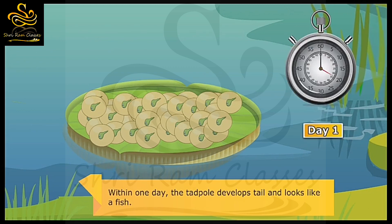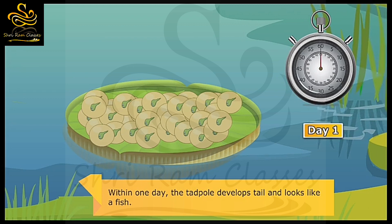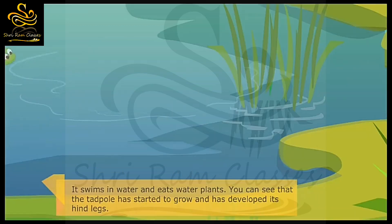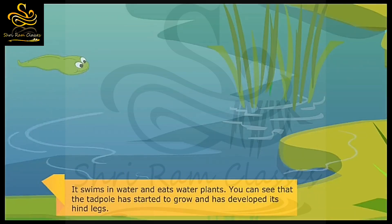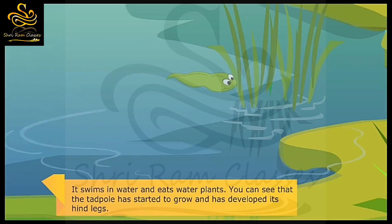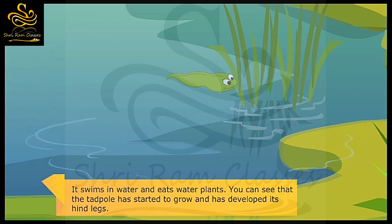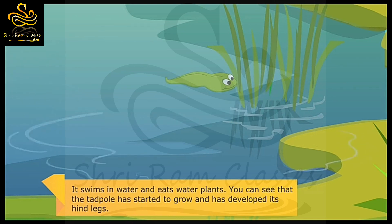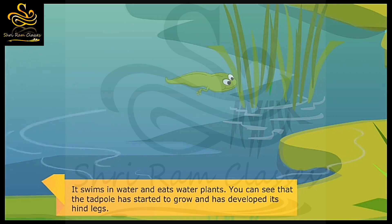Within one day, the tadpole develops a tail and looks like a fish. It swims in water and eats water plants. You can see that the tadpole has started to grow and has developed its hind legs.